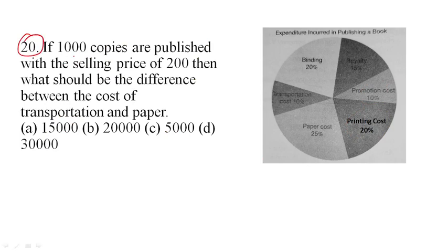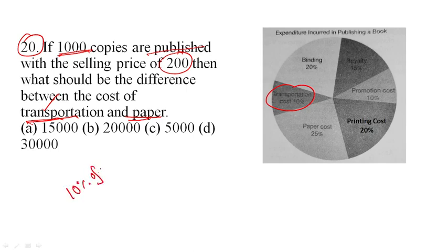So if we assume that total cost is 20 percent, then what should be the difference between the cost of transportation and paper? Transportation is 10% and paper is different — what should be the difference between transportation and paper costs?